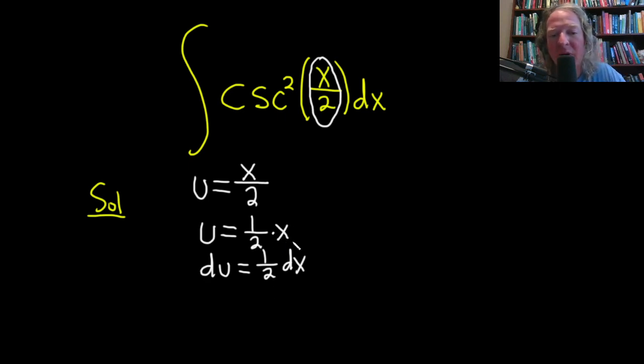The goal is always to make this look like whatever is up here in your integrand. However, down here we have a 1 half and up here we don't, so we have to get rid of it. Let's multiply by 2, so I'll put a 2 here and a 2 here. So this is 2 du equals dx.